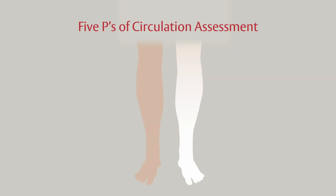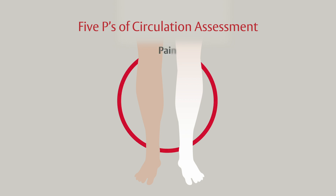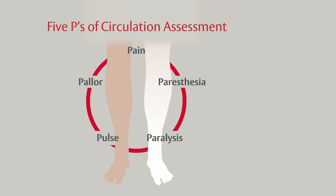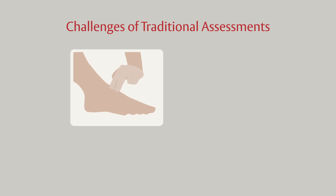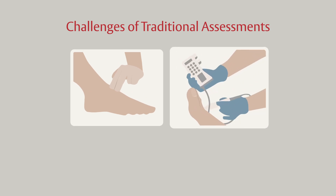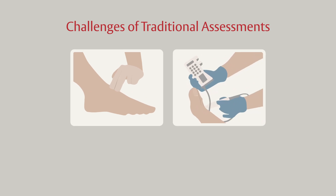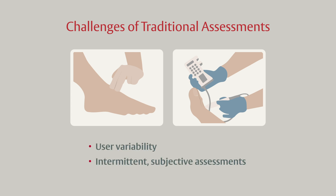Traditional methods of monitoring leg perfusion while arterial flow is interrupted include the five P's of circulation assessment: pain, pulse, pallor, paresthesia, and paralysis. Other assessment tools include using ultrasound, Doppler, and ankle brachial index. These common assessment tools are subjective and intermittent, which may delay the detection of ischemia.